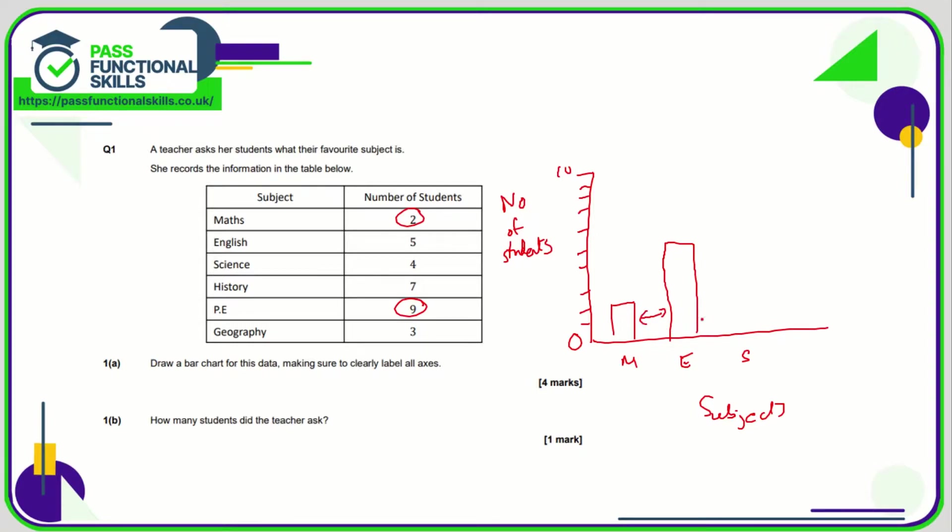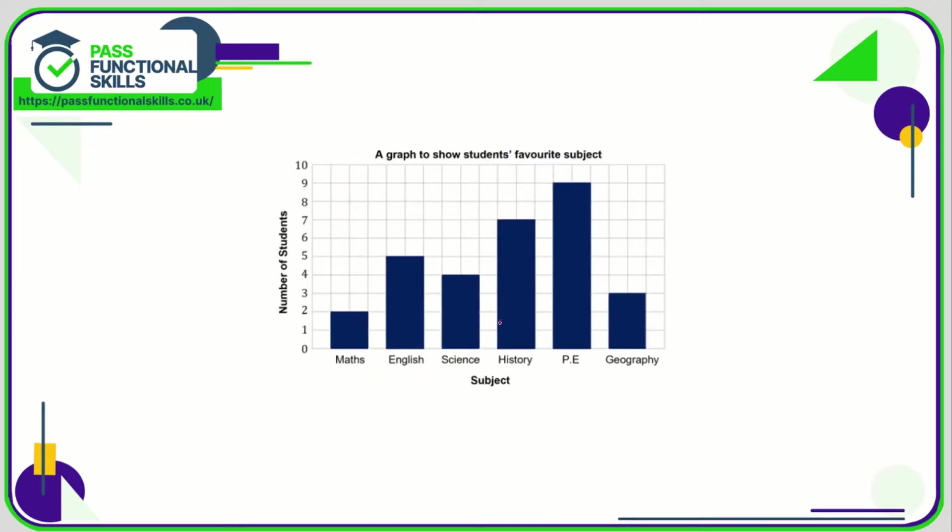There should be space between them to make it clearer. The key thing is get the scale right, label the axes, and make sure every bar has the same width. If we take a look at the model answer, the scale goes up in ones to ten, axes clearly labeled, each subject clearly labeled.